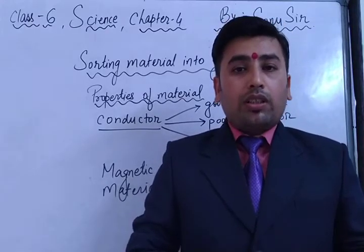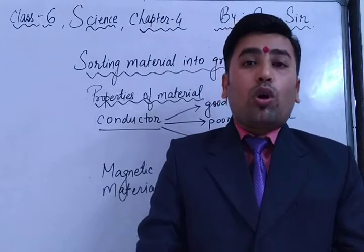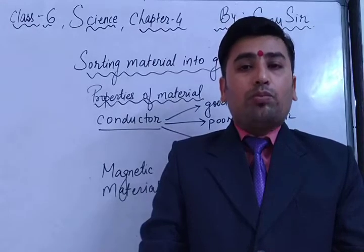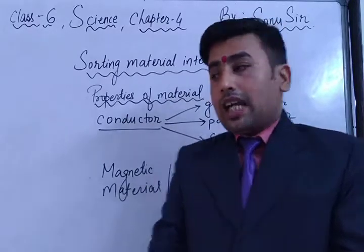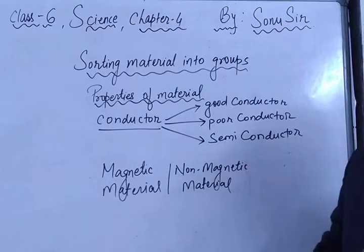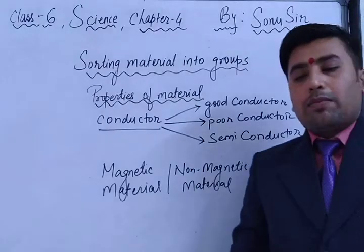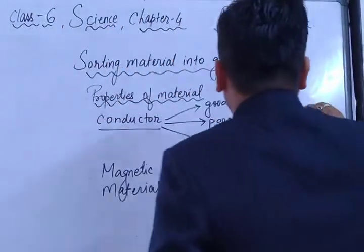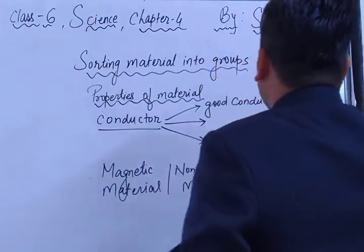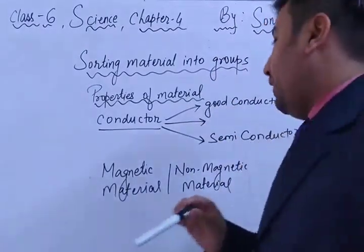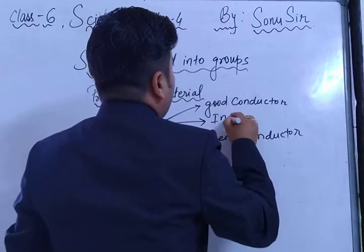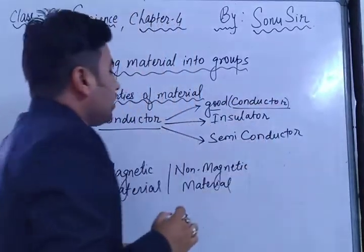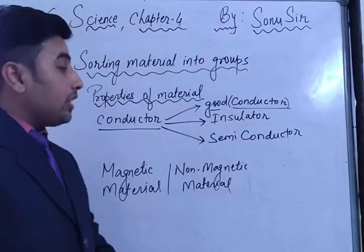A material which allows heat and electricity to pass through it is called a conductor. A material which does not allow heat and electricity to pass through it is called a non-conductor, bad conductor, poor conductor, or insulator. So there are three types: good conductor, poor conductor — which is also called a bad conductor or insulator — and semiconductor.